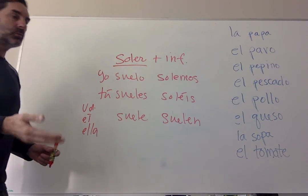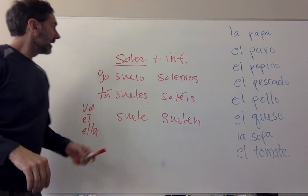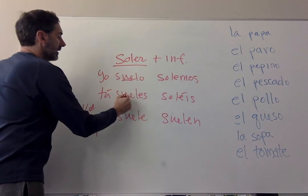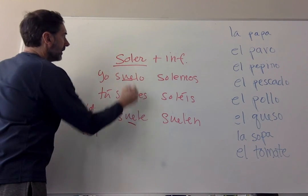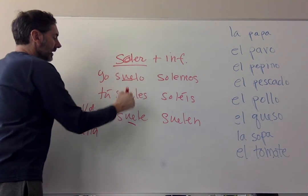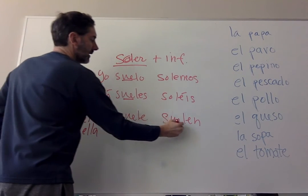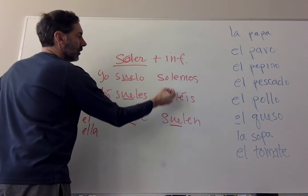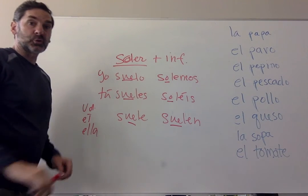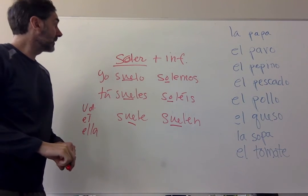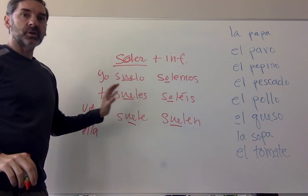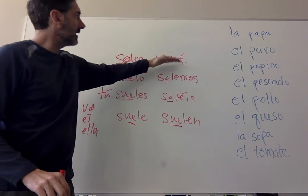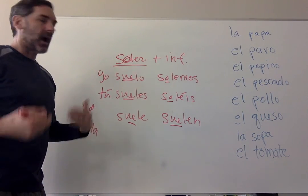To be in a habit of doing something. Notice that soler is a stem-changing verb — the O becomes UE in the yo, tú, él/ella, and ellos/ellas forms. We go back to the original O in the nosotros and vosotros forms. So that's half of our construction — I usually — and now we need an infinitive to follow it.